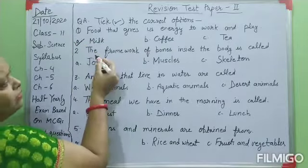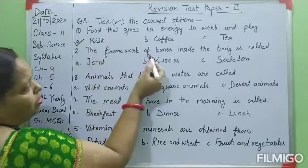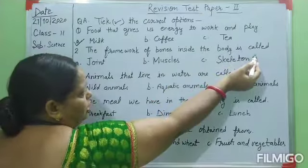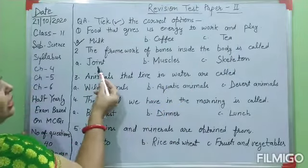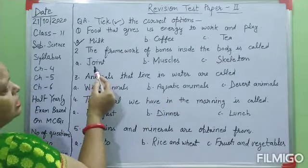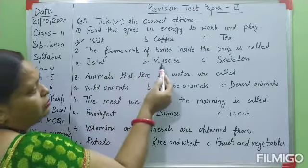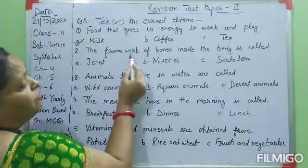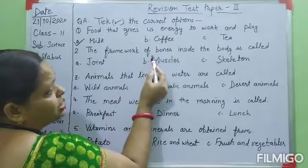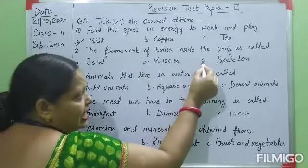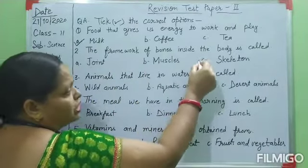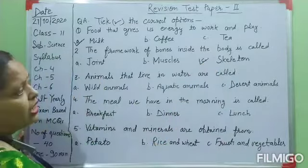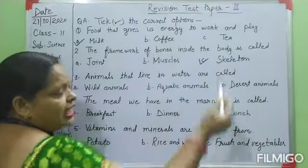Second question: the framework of bones inside the body is called. Options: A — joint, B — muscles, C — skeleton. The framework of bones is called skeleton. That's why you have to click option C. Your right option is skeleton.